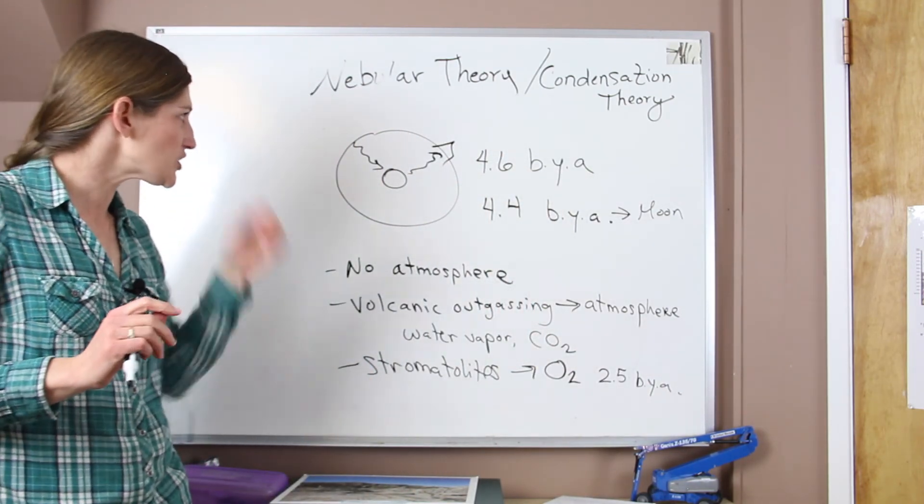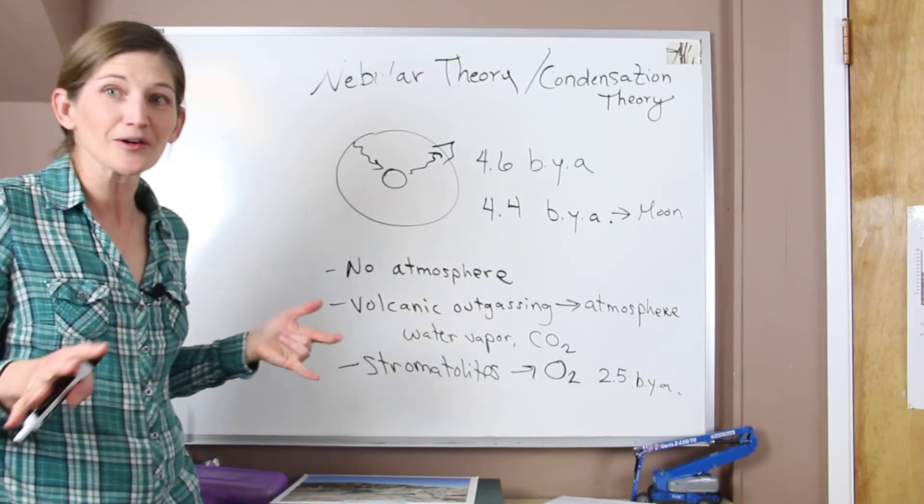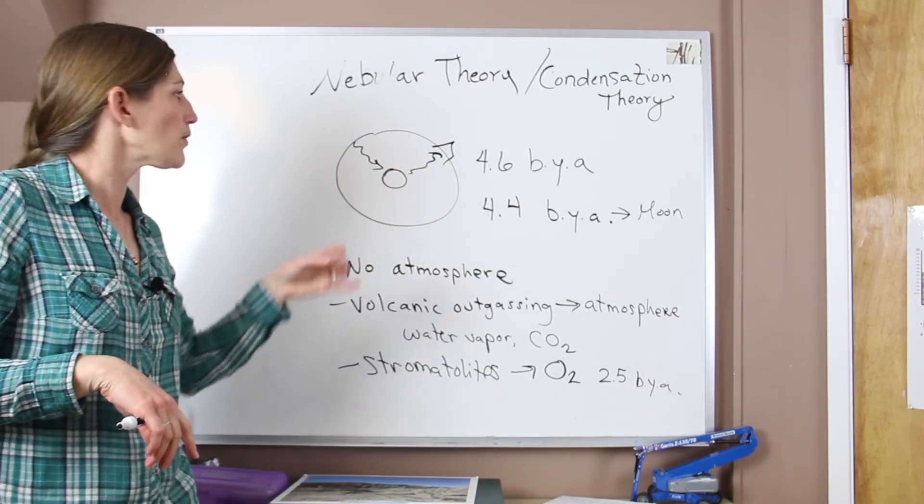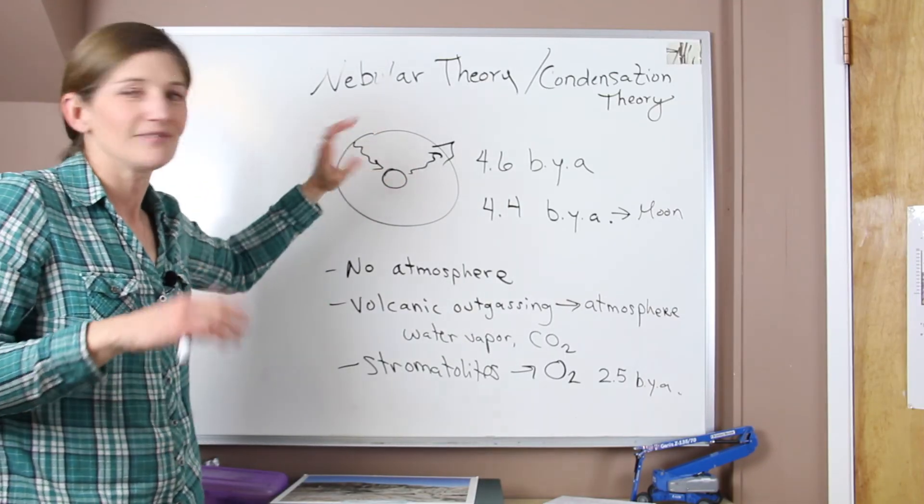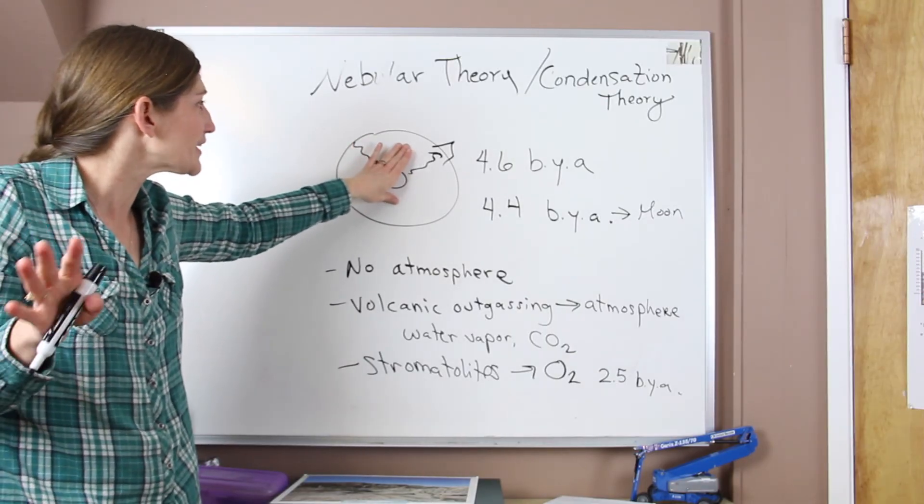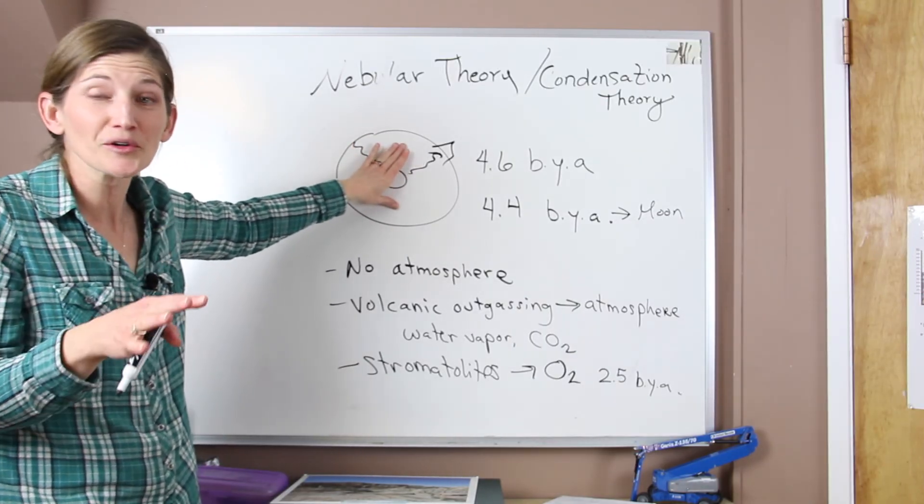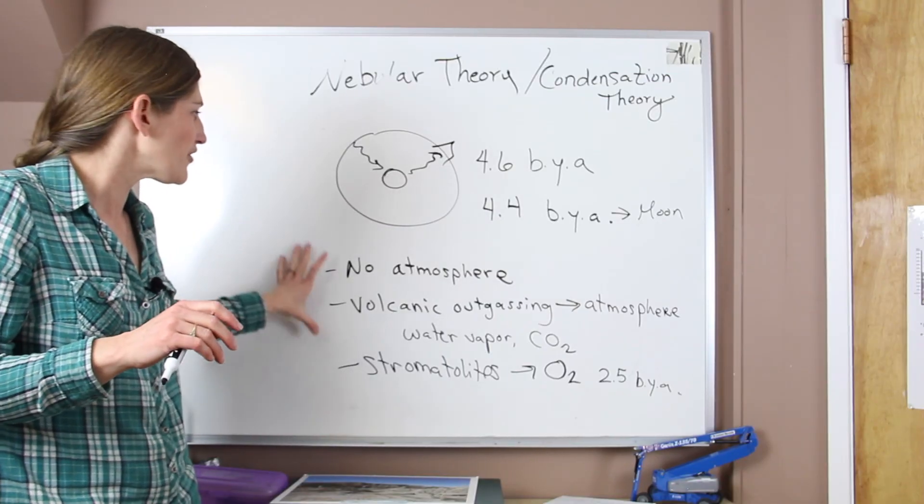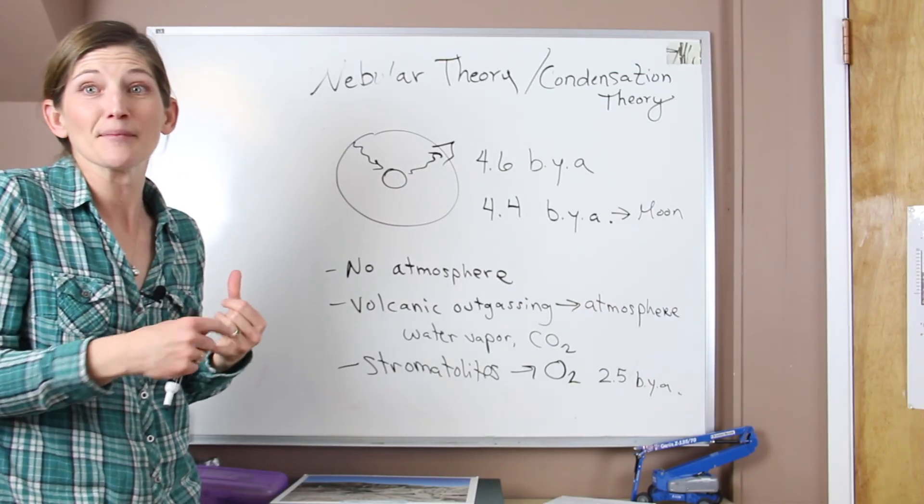All right. So that's just a very quick look at where the earth came from, how it formed, a really very quick look at the layering in the earth. There are more videos you can watch about the earth's internal layering. And then just a very brief history of how our atmosphere came about.